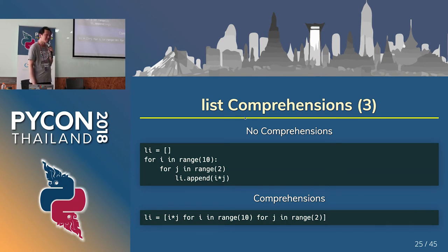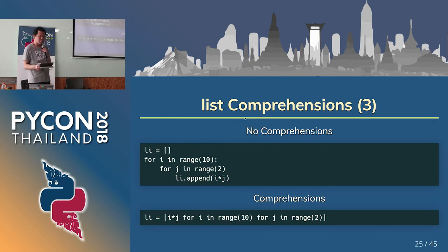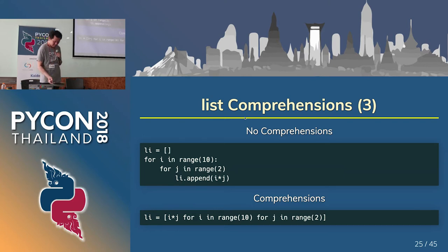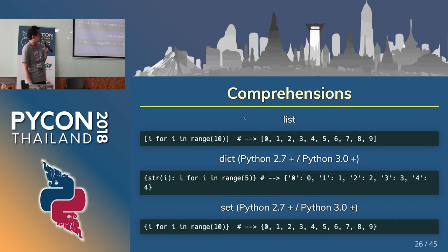Third, nested loops. List comprehensions can include two loops, or potentially many nested loops. However, I don't recommend using more than three loops in comprehensions because too many loops will not be readable. This is the comprehension series: first is list comprehension, second is dict comprehension, third is set comprehension. For example, the dict comprehension.